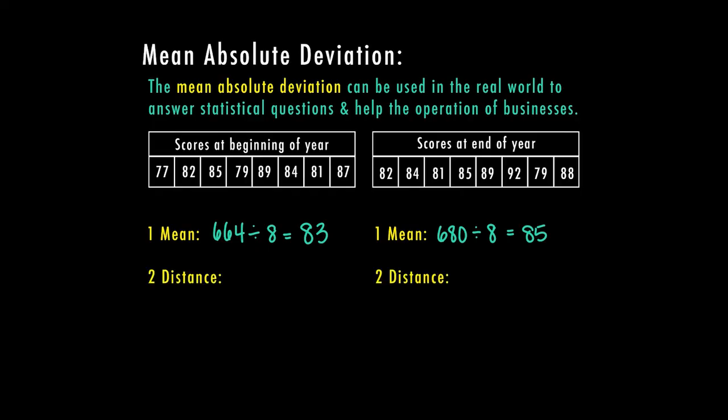Step 2 again is to find the distance between each of the means and each of the scores in the list. So the distance here is 6. Between 83 and 82 is 1. 85 would be 2. 79 is 4. 89 is 6. 84 is 1. 81 the distance is 2. 87 is 4. And then I want to add all of those numbers up. So this one is going to end up being 26 when I add them all up.